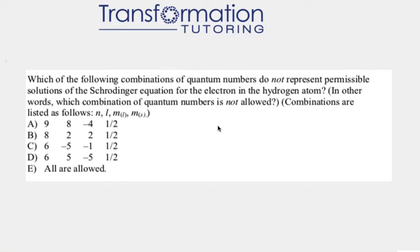Which of the following combinations of quantum numbers do not represent permissible solutions of the Schrodinger equation for the electron in the hydrogen atom? In other words, which combination of quantum numbers is not allowed?